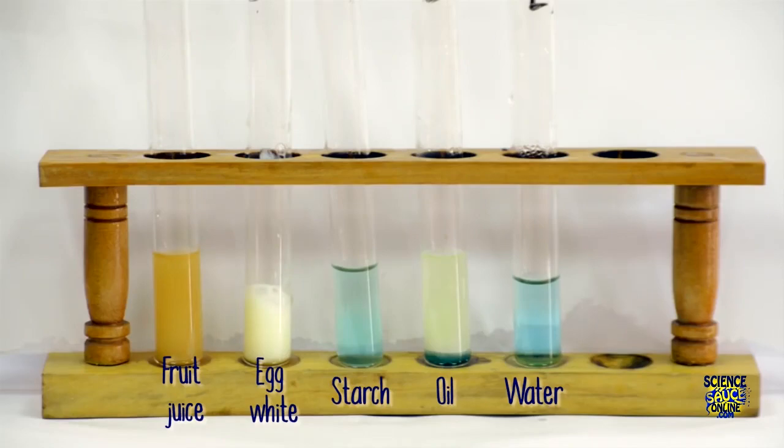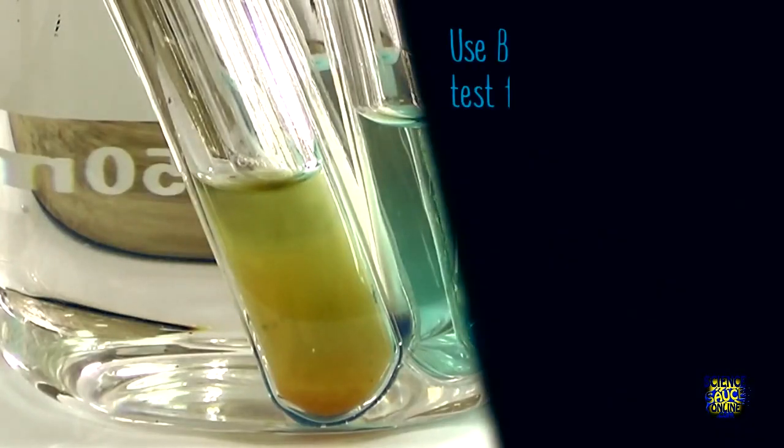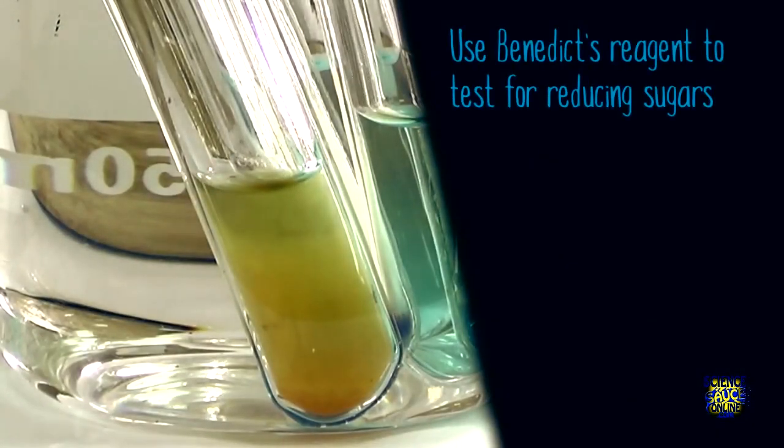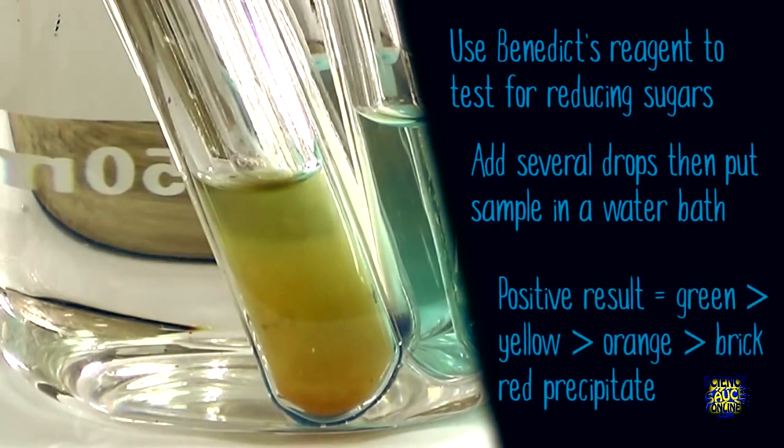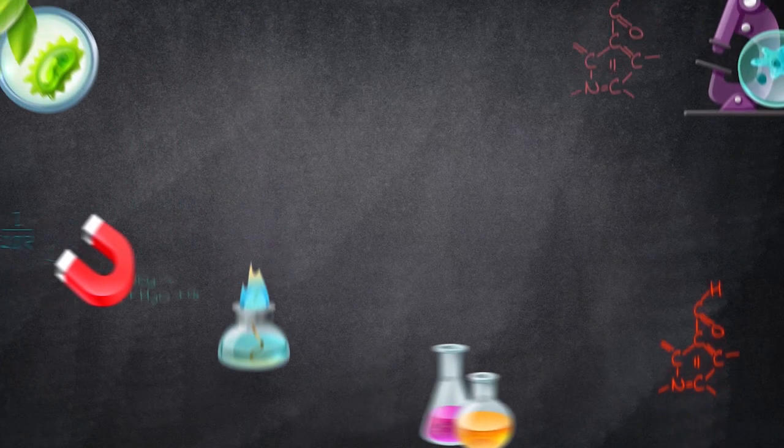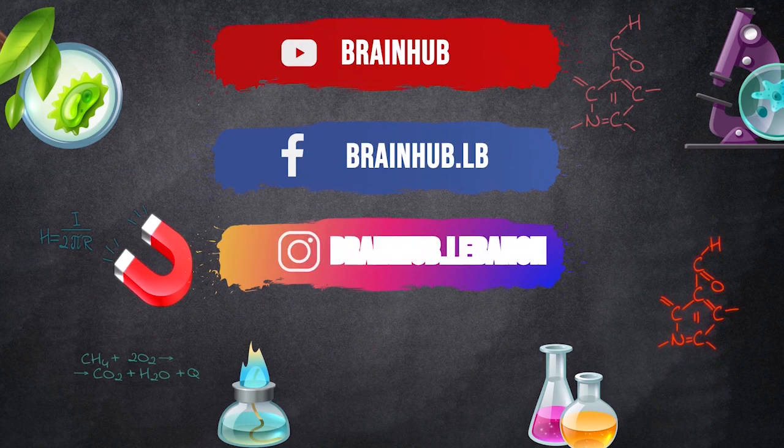When we put them back into the test tube rack, we can see that fruit juice is the only one that reacted, suggesting it contains reducing sugars. To summarize, we use Benedict's reagent to test for reducing sugars. Add several drops to your samples, then put them into a water bath. Depending on how much reducing sugar is present, it will first turn green, then yellow, then orange, and it could form a brick red precipitate if there is a lot of sugar present.